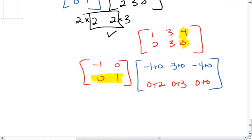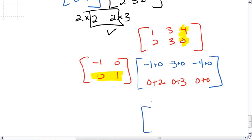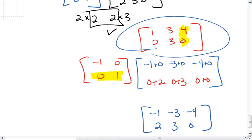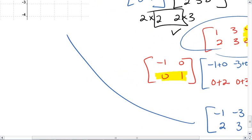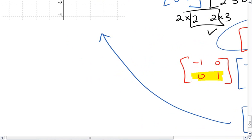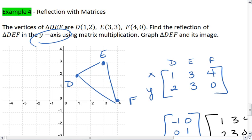So our final answer, our image matrix, is negative 1, negative 3, negative 4, 2, 3, 0. And what we should notice is the original matrix looks almost the same numerically, just the top row of the signs have changed. And that's because all the x values have changed. If we were to graph this, we would get the images.